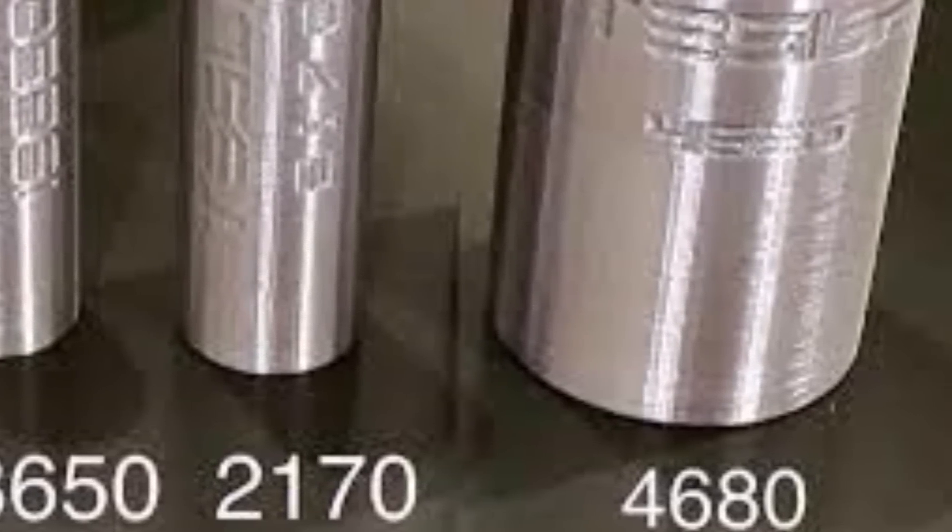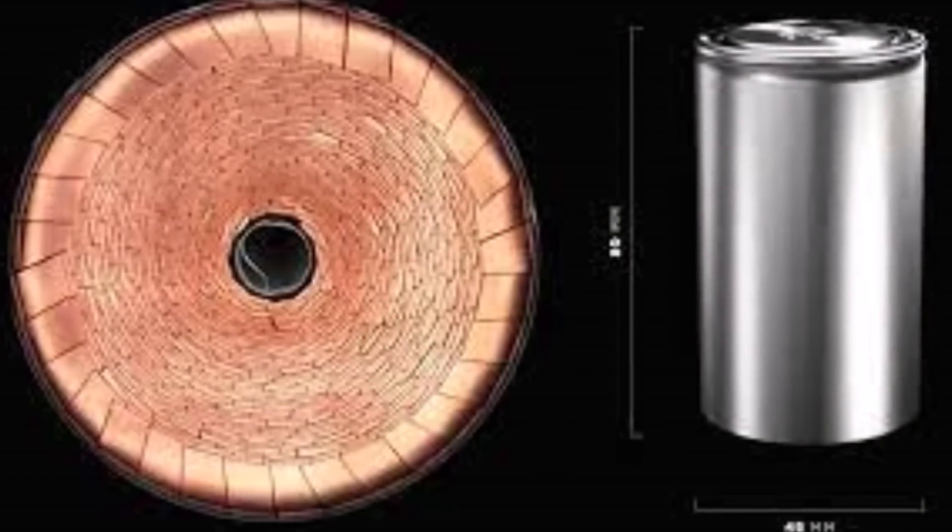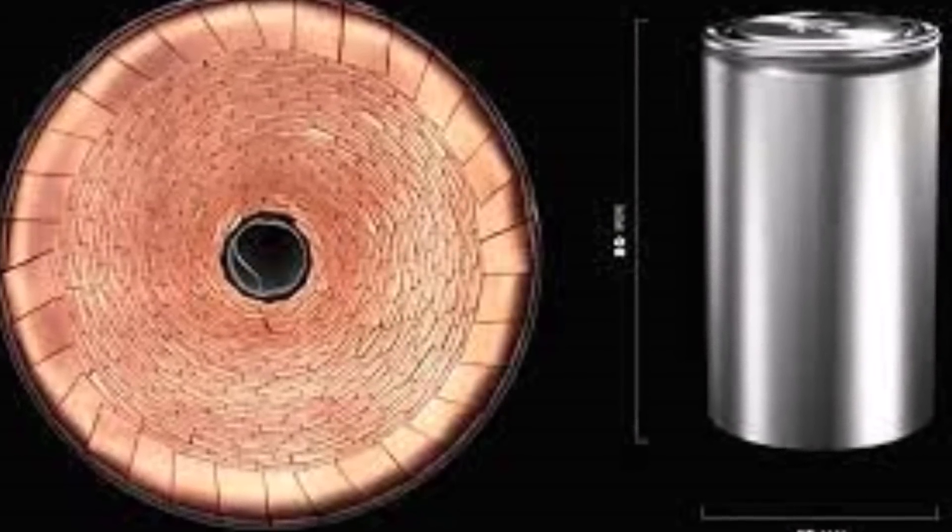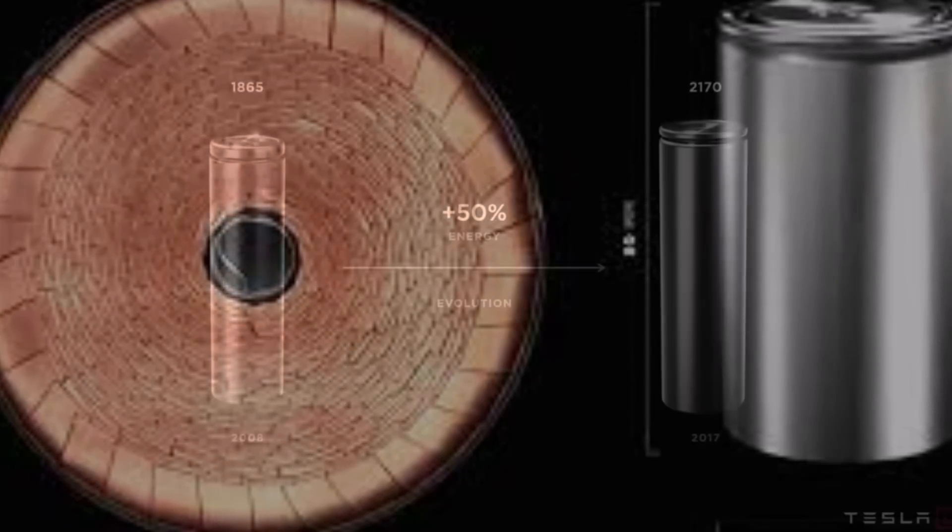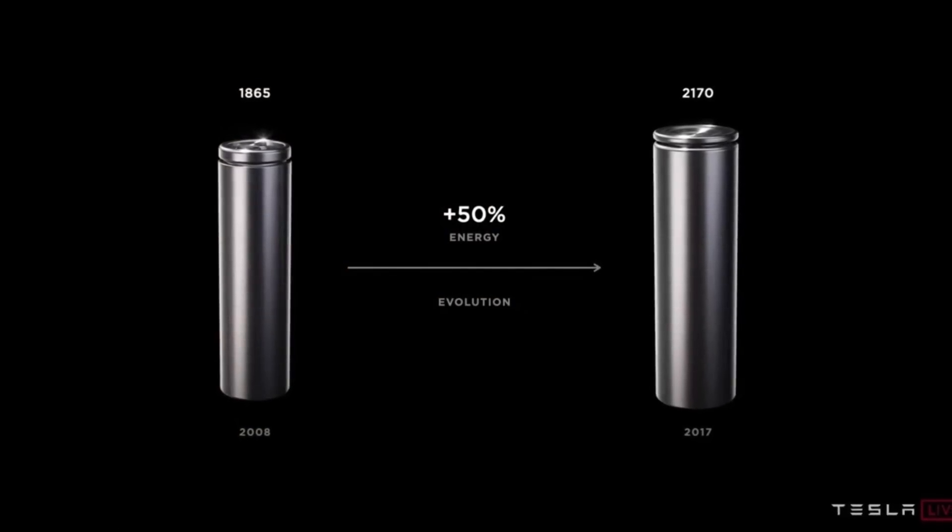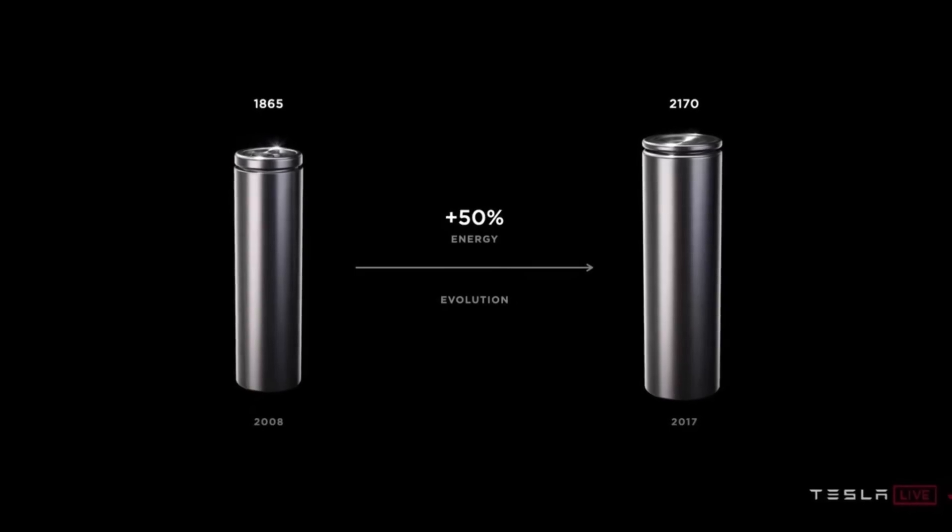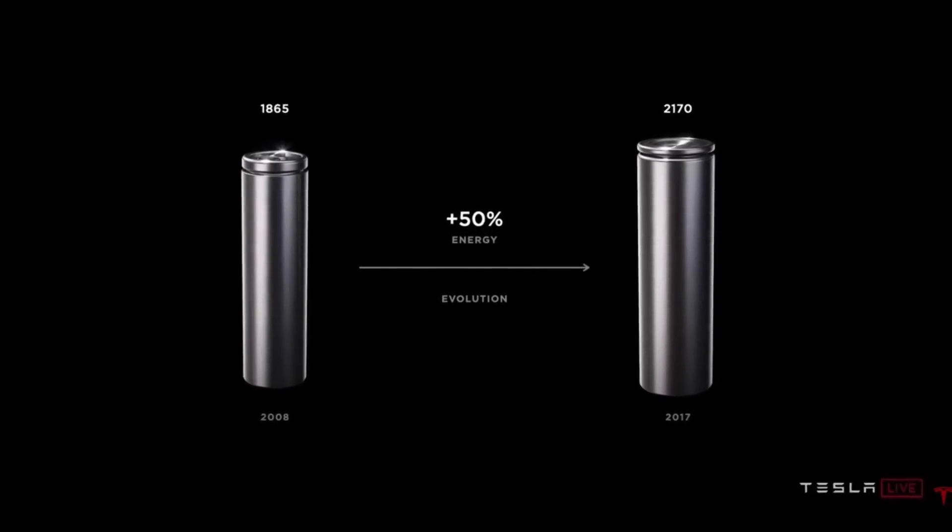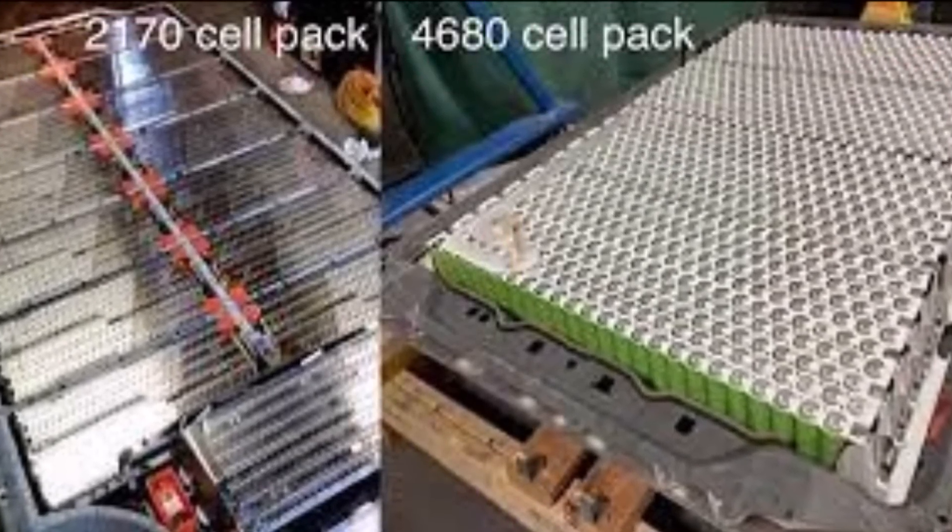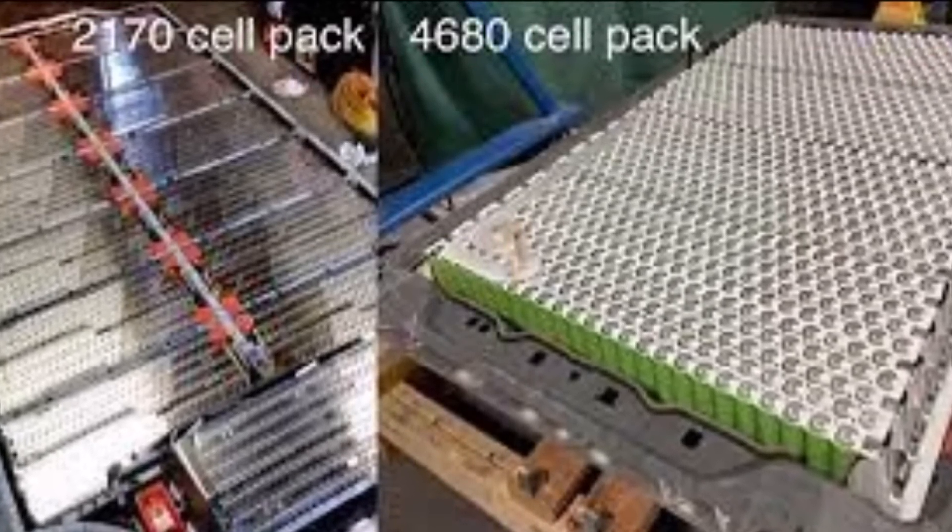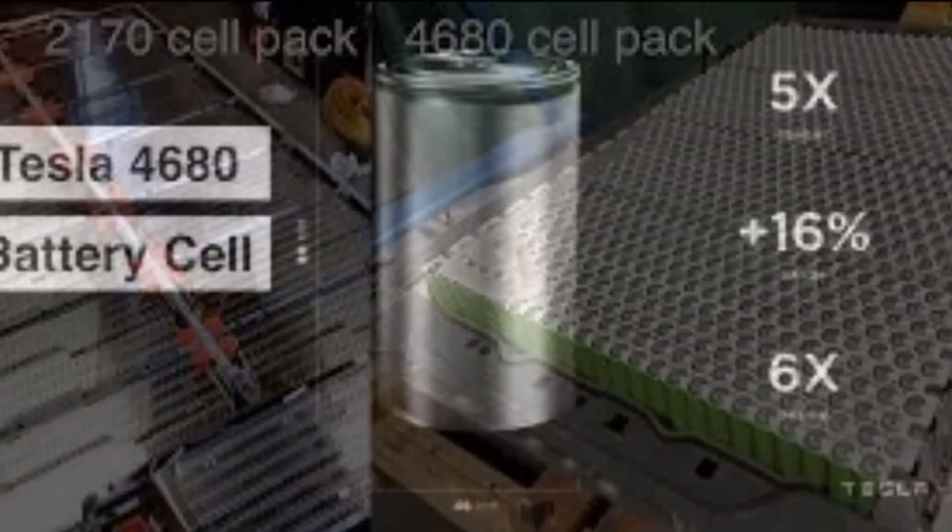I would call that more than incremental and would allow Tesla to offer a true Model Y SR and SR Plus that would basically be today's Long Range and have more than acceptable range. What Tesla does regarding range is another topic and not easy to figure out, but we will not have too long to wait and see at this rate of progress.